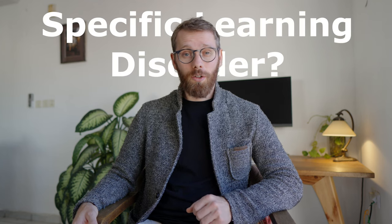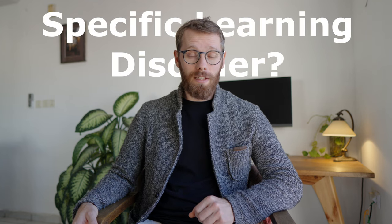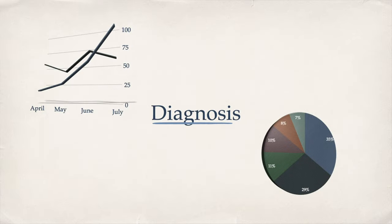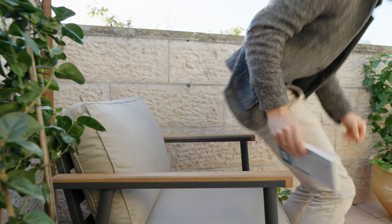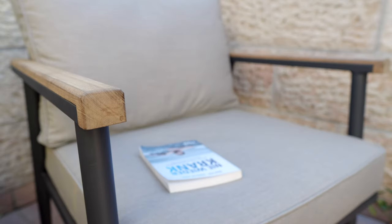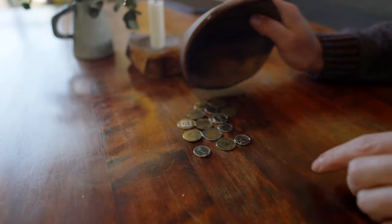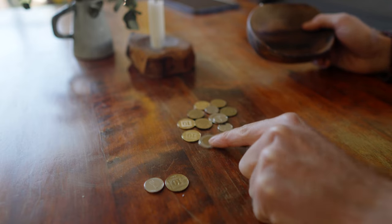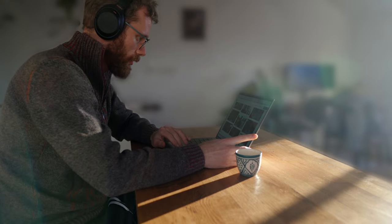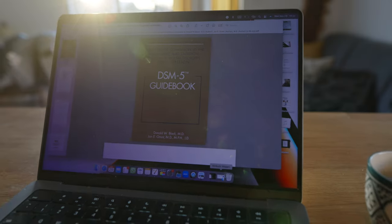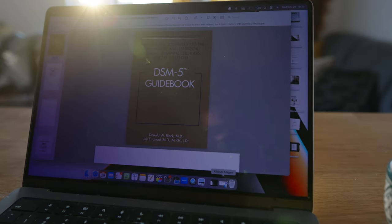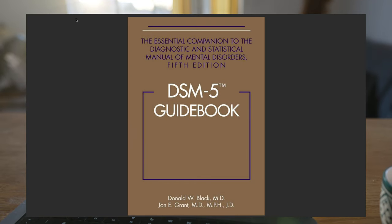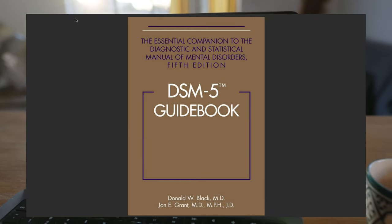What is a specific learning disorder, and could you actually qualify for such a diagnosis? If you have been struggling with reading, writing, or math-related tasks, then that could actually be you. The official criteria for a learning disorder are classified by the DSM-5, which stands for the Diagnostic and Statistical Manual for Mental Disorders. This manual provided the basic information for this video.